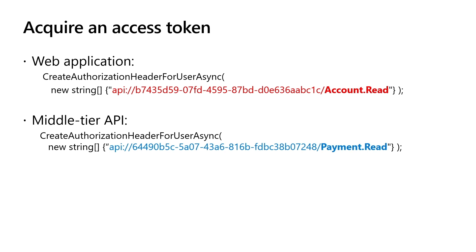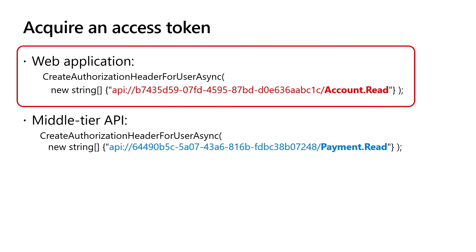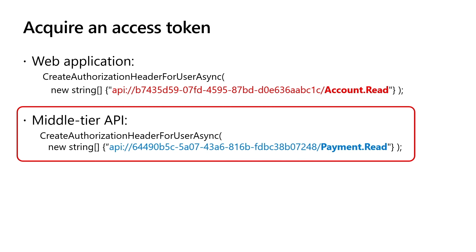Now it's time to take a look at the code. The web application calls the 'AcquireTokenOnBehalfOfAsync' function to acquire an access token to call the middle tier with its scopes. The middle tier API also calls the same function but with different scopes, as required by the downstream API. This is where the authentication library behind the scenes asks Microsoft Entra ID to issue a new access token for the downstream API.